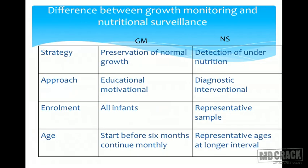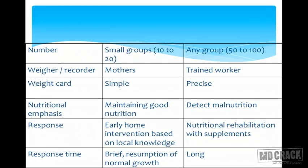For nutritional surveillance: the strategy is detection of under-nutrition; it is of diagnostic value; it uses a representative sample — not everybody; measurements are taken at longer intervals by trained workers; the group is very large; the weight card is precise; it detects malnutrition; nutritional rehabilitation with supplements is the response; and the response time is long because data on a large scale must be compiled, analyzed, and acted upon — creating a significant lag between surveillance and intervention.